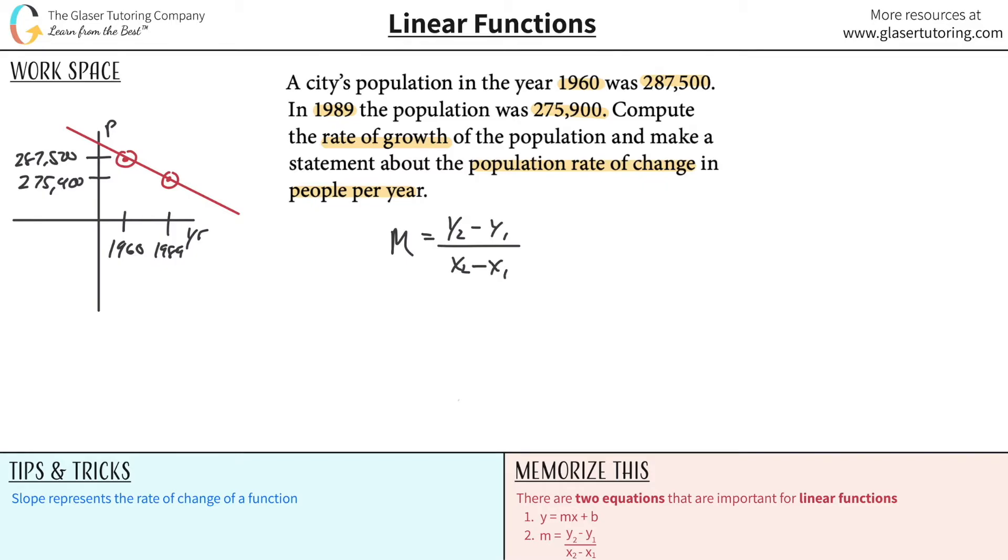So these things that they gave us are really points. The coordinates for the first piece of data was going to be the x value is 1960 and the population is 287,500. And then the next one was 1989 and that had a population of 275,900. So let's call this our x1 and this one our y1. Let's call this one our x2 and this one our y2. And let's now plug it in.